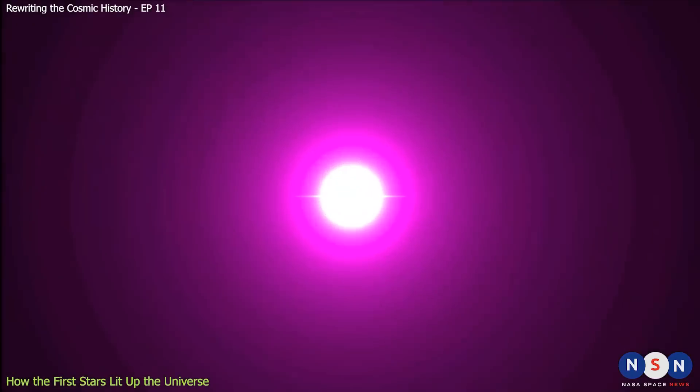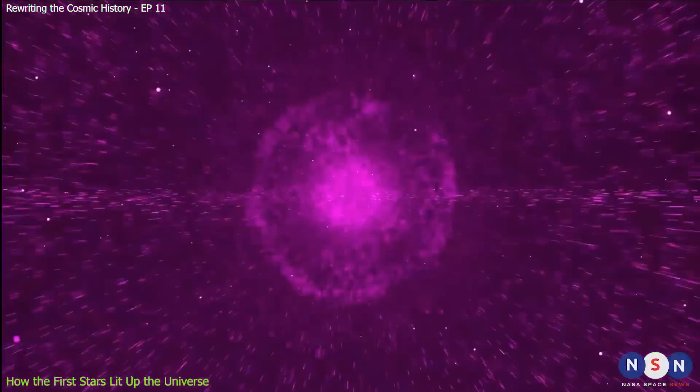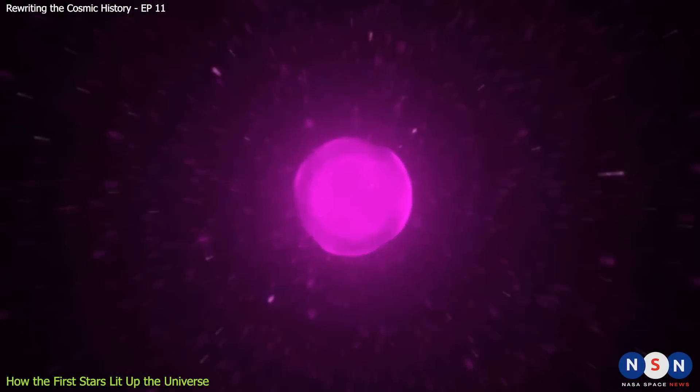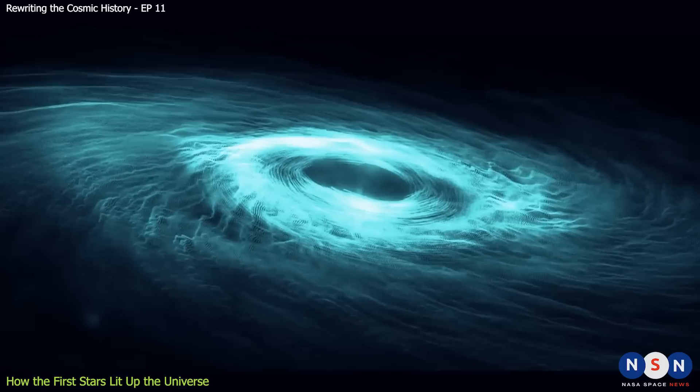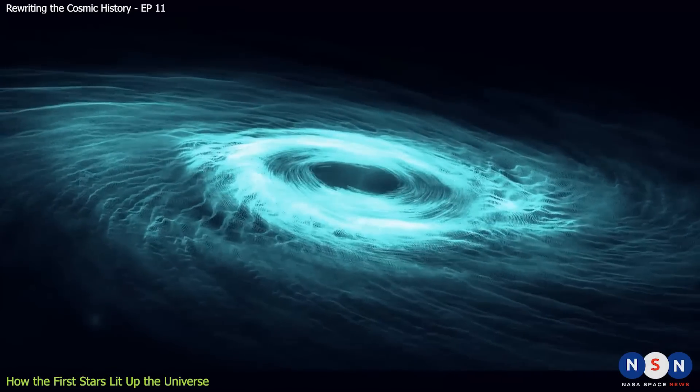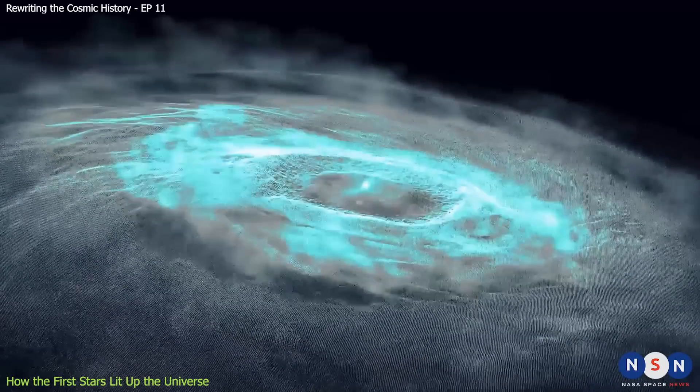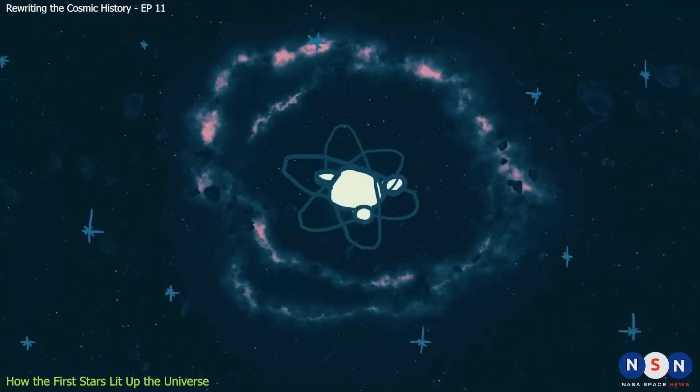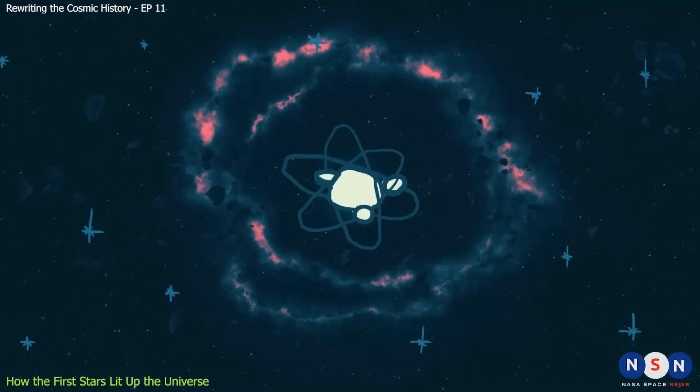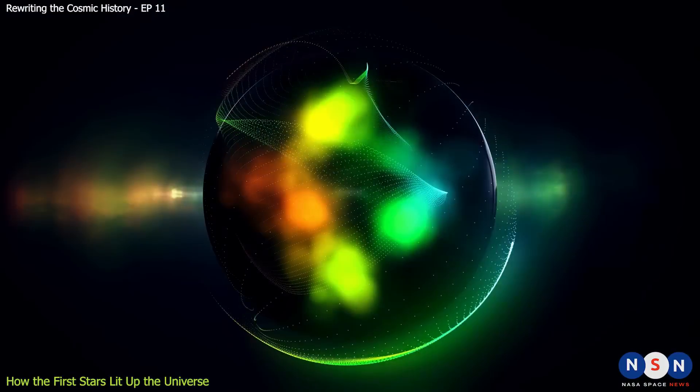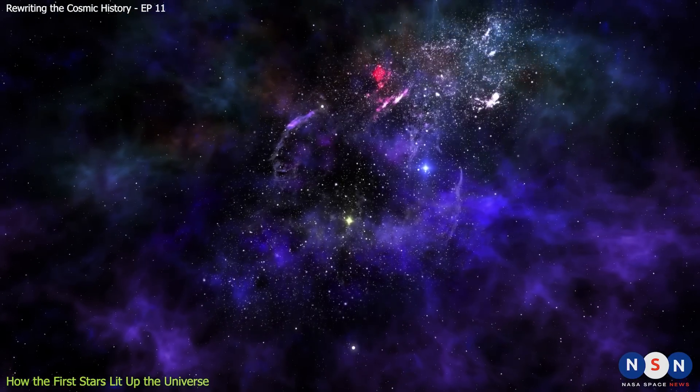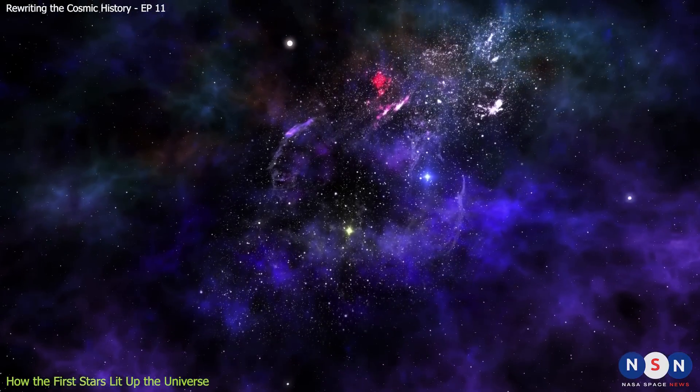According to our theories, the universe started with a huge explosion, called the Big Bang, and then it grew bigger and colder very fast. For a long time, the universe was like a thick fog of tiny particles that bounced off each other all the time. This fog was so dense that light could not travel very far. This is why we call this period the Cosmic Dark Ages. But as the universe grew bigger, the fog became thinner and cooler, until it reached a point where particles could stick together and form atoms.